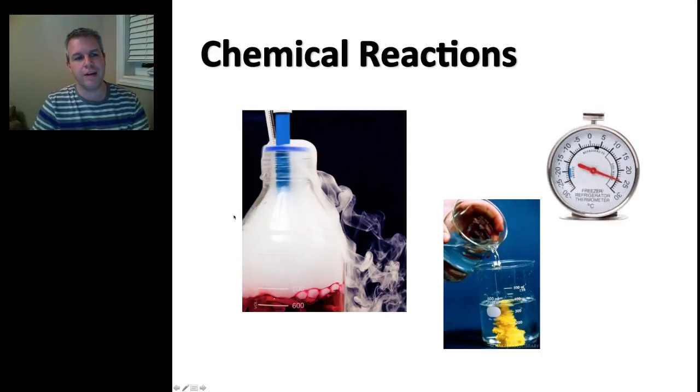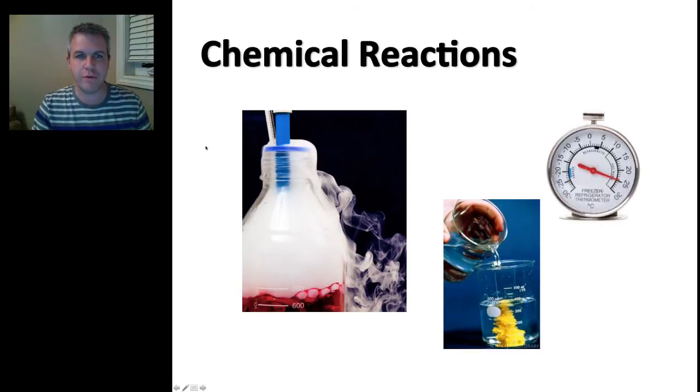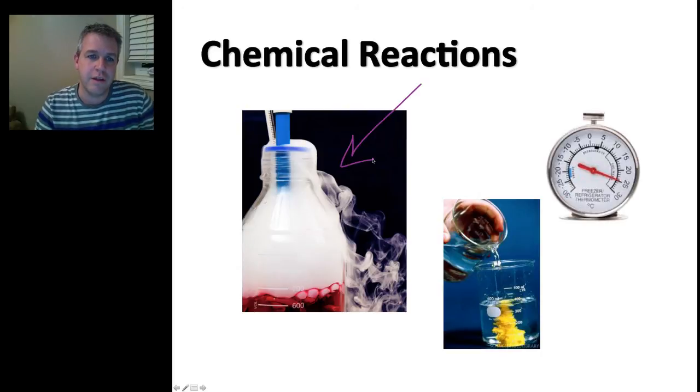Now, this leads us to chemical reactions. So, now that we have an understanding of the properties, we're going to look at the chemical reactions. And in order to have a chemical change, there needs to be a, or in order for a chemical reaction to take place, there has to be a chemical change. Now, how do we know that there's been a chemical change that's taken place? Well, here, again, we may have a gas that's released.